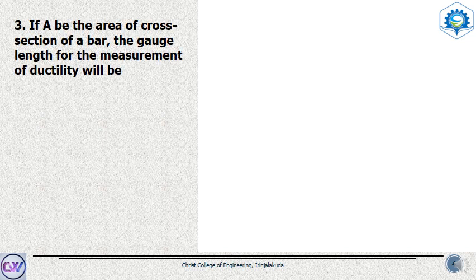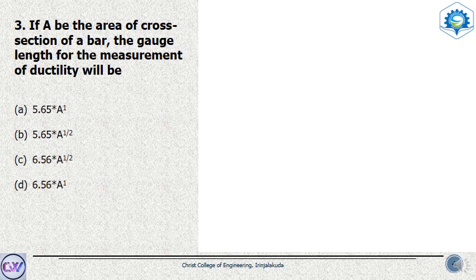Now let's look at a question related to ductility. If A is the cross-section of a bar, the gauge length for the measurement of ductility will be — options: 5.65 into A, 5.65 into root A, 6.56 root A, or 6.56 into A. From the Indian Standard codes, gauge length is the length used to measure material properties whenever we do tension testing, and it is given by 5.65 into root A. So option B is correct.